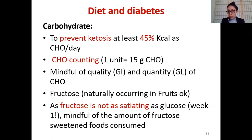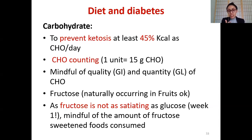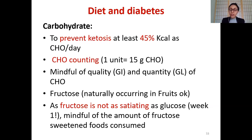Fructose is absorbed via passive diffusion and does not need insulin for its absorption, so it will not directly increase blood sugar levels. However, fructose is less satiating than glucose, and in excessive concentrated amounts it can result in non-alcoholic fatty liver disease, uric acid and gout problems, and excess endogenous fat production. That's why fructose is called a 'sweet poison' and needs to be consumed in moderation. Fructose is okay for diabetic individuals, but not in excessive concentrated amounts.